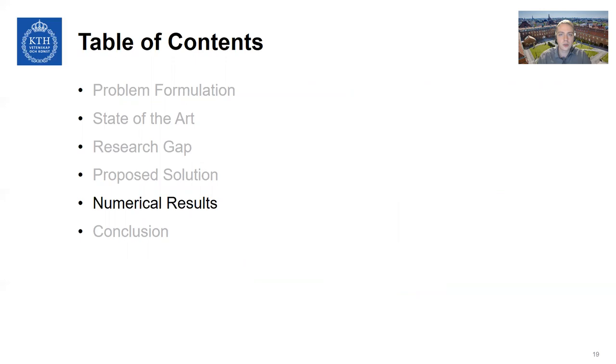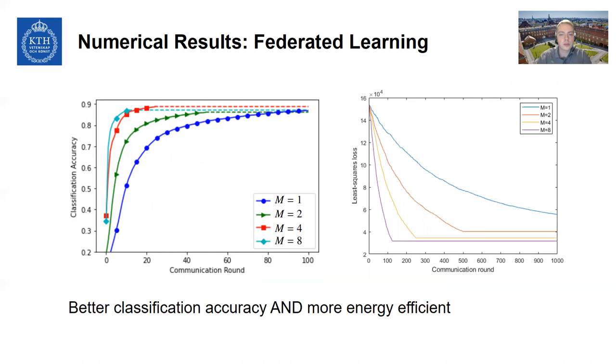With that solution explained, we're going to move on to some numerical results and compare this to using a single transmission. In the left plot here, you can see we have compared four different settings where we have changed the number of transmissions in this uplink aggregation step. And this is training over a classical MNIST dataset and training a classifier. And as you can see on the blue line, which is M equals one, we have 100 communication rounds available to train. But then to make a fair comparison, when we increase the number of transmissions, we reduce the total number of communication rounds.